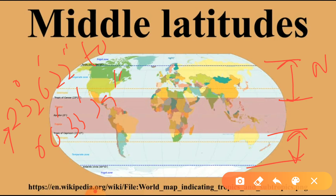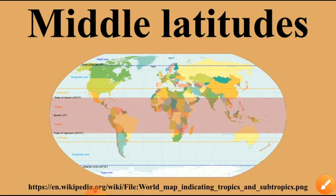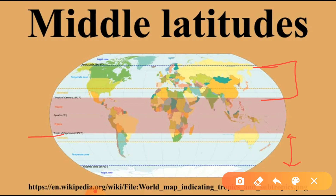From the Tropic of Cancer to the Arctic Circle in the northern hemisphere — we know that the Tropic of Cancer lies at 23 and a half degrees and the Arctic Circle lies at 66 and a half degrees. The region between these is called the middle latitudes. Similarly, in the southern hemisphere, the Tropic of Capricorn lies at 23 and a half degrees and the Antarctic Circle lies at 66 and a half degrees, so the region between these two is called the mid-latitude region or middle latitudes.